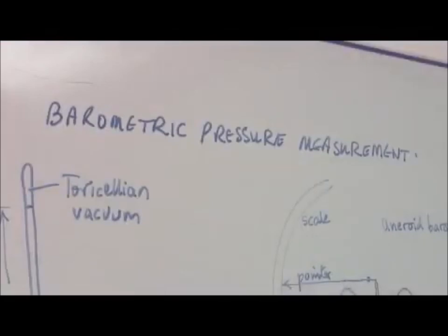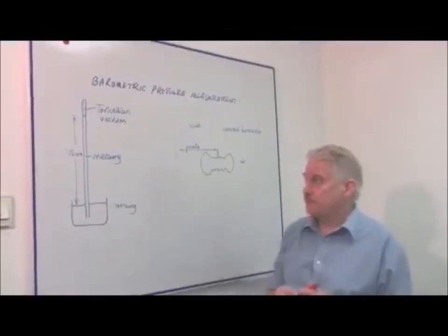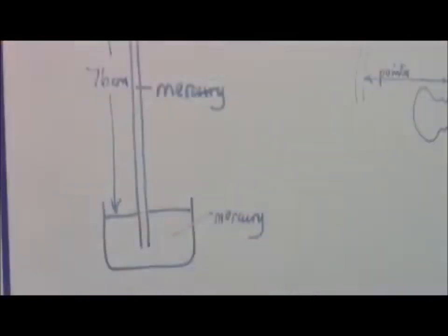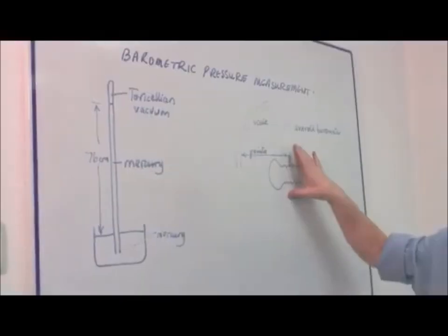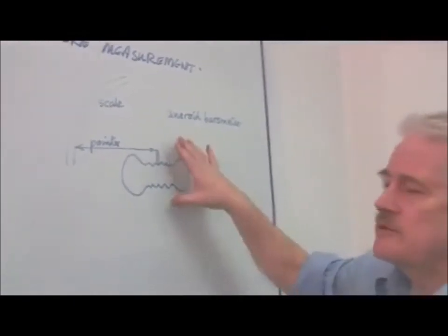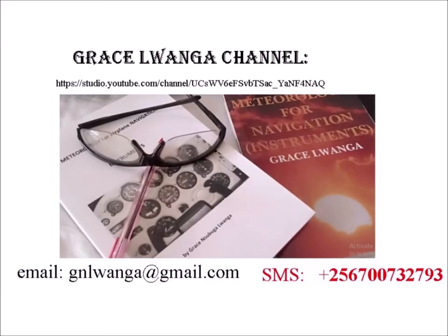I'm Steve Jones. I'm going to explain how barometric pressure is measured. There are two basic devices: the first is a mercury barometer and the second is an aneroid barometer. The aneroid barometer is the cheaper and safer device, and is the one used in those barometers you hang on the wall which have a needle. The aneroid barometer is now installed.